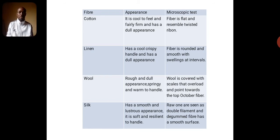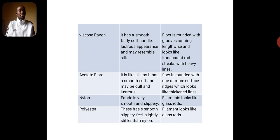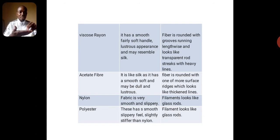Note that wool and silk are animal fibers — silk is gotten from the silkworm, while wool is gotten from angora rabbits and other breeds of animals. Viscose rayon is a man-made fiber. It has a smooth, fairly soft handle, is lustrous in appearance, and may resemble silk. When viewed under the microscope, the viscose rayon fiber is rounded with grooves running lengthwise, looking like transparent rods with heavy lines on it.